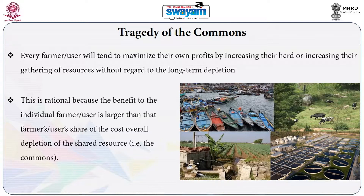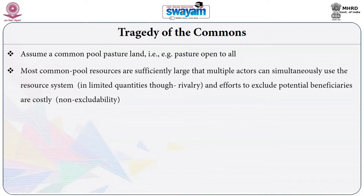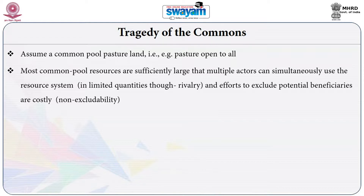Let me explain this with the same example Hardin used in his paper — a common pool pasture land open to all people who live around it. Like any common pool resource, it is sufficiently large for multiple users to use simultaneously, though in limited quantities because the resource is rivalrous in nature. If one person uses that specific resource, it is not available for another person to use at the same time because it is limited in quantity.